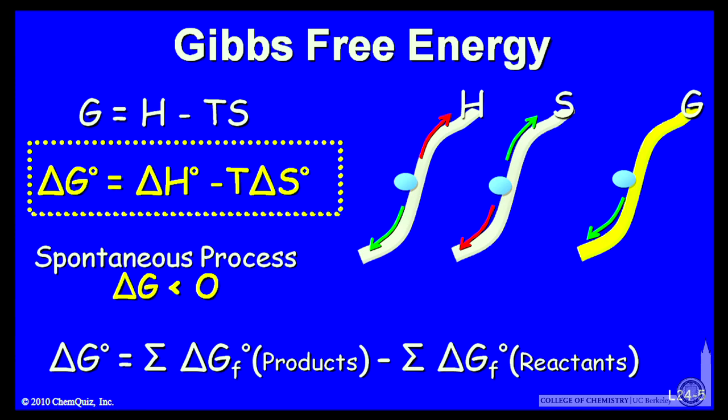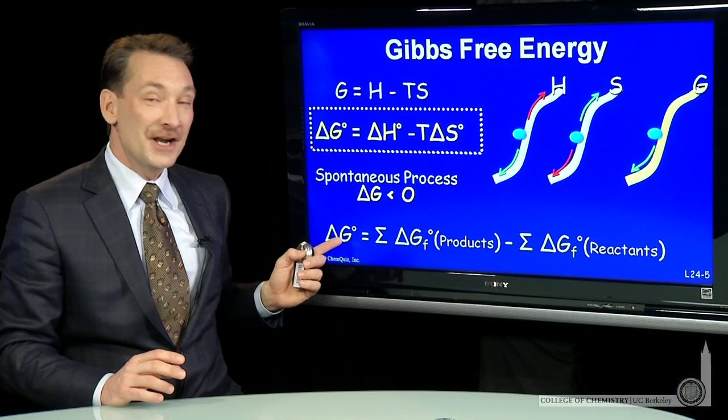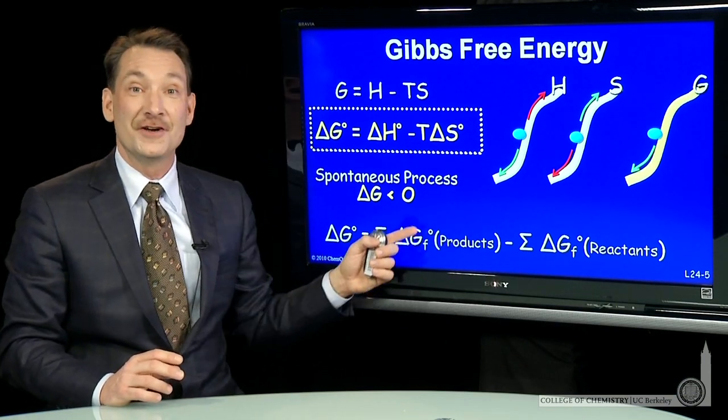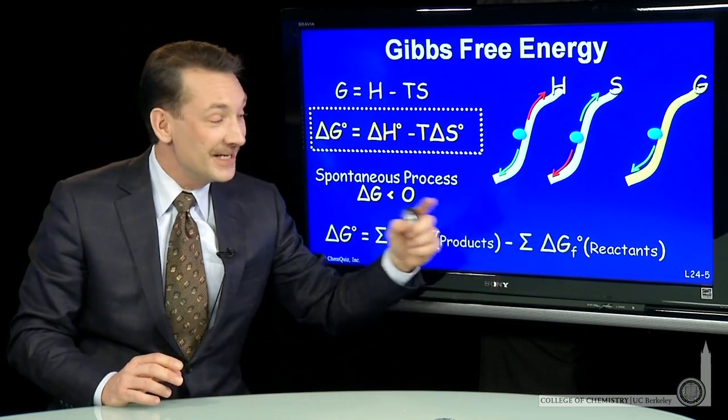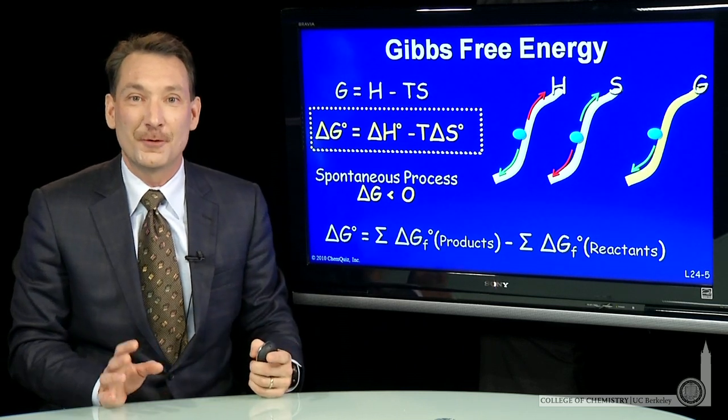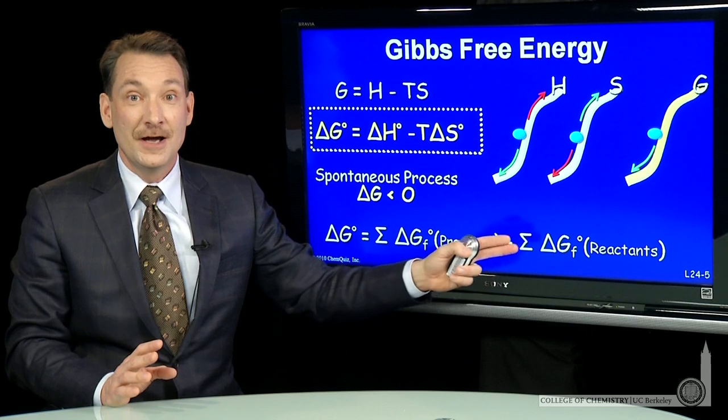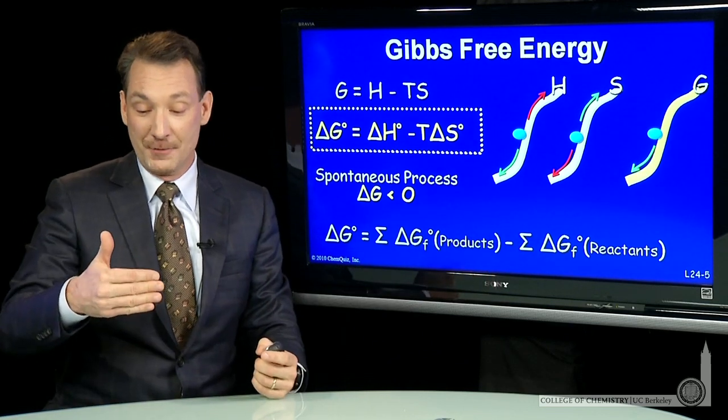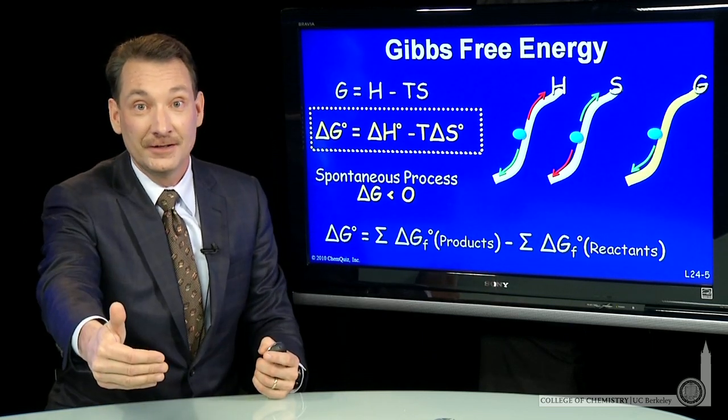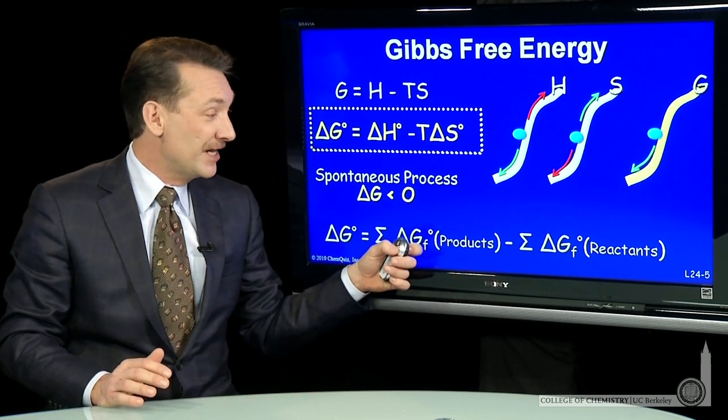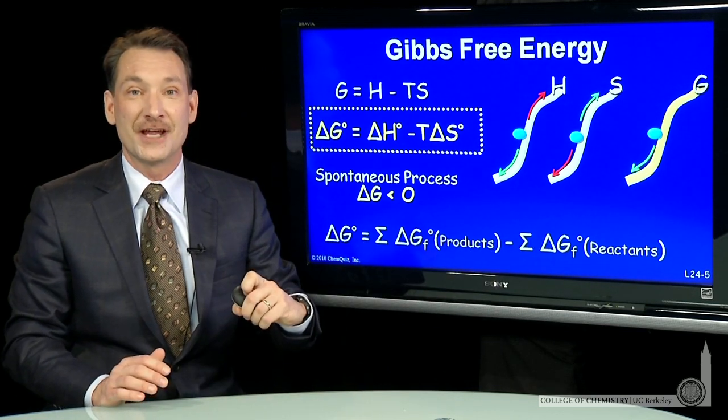Now, since free energy is a state function, I can calculate the free energy change for a reaction by taking the standard free energies of formation of the products minus the standard free energies of formation of the reactants. So this gives me a powerful tool to determine whether a reaction is favored or unfavored based on free energies of formation of the products and reactants.